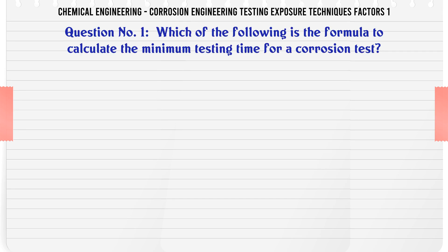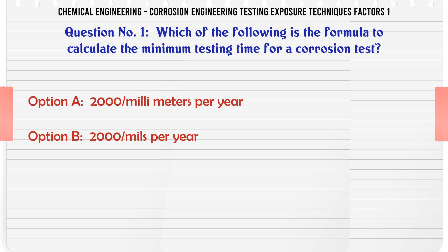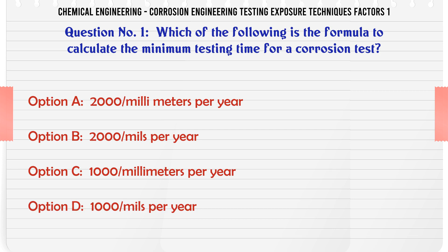Which of the following is the formula to calculate the minimum testing time for a corrosion test? A. 2,000 mm per year. B. 2,000 mL per year. C. 1,000 mm per year. D. 1,000 mL per year.